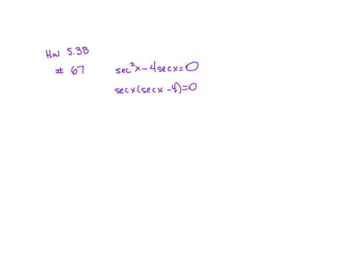Next we solve for x using the zero product property. So secant of x equals 0, and secant of x minus 4 equals 0.